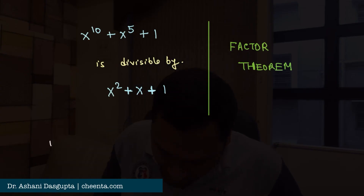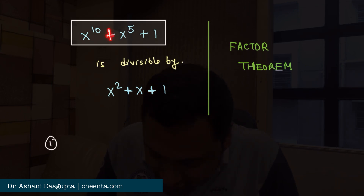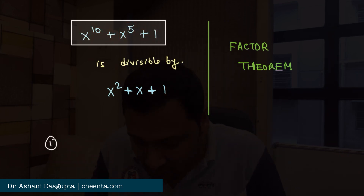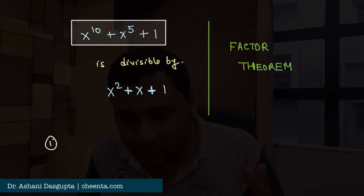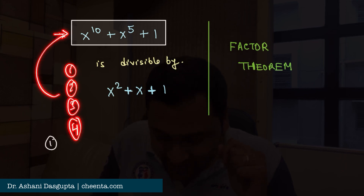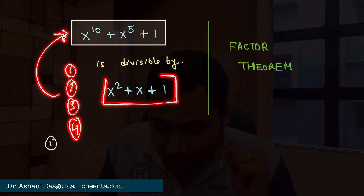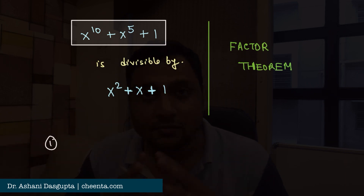The problem is from ISI B.Stat / B.Math entrance 2023 — a very beautiful problem. We have the expression x¹⁰ + x⁵ + 1, and we want to show that this is divisible by x² + x + 1. It was an objective problem asking which of four options divides the expression. You could long-divide to check, but using the factor theorem makes things very simple.